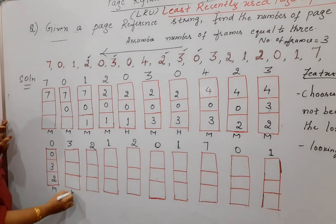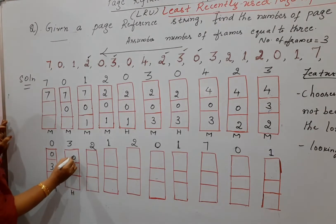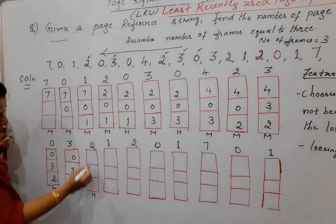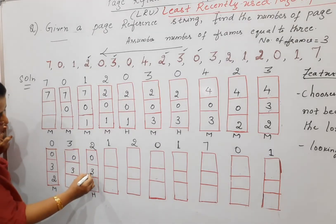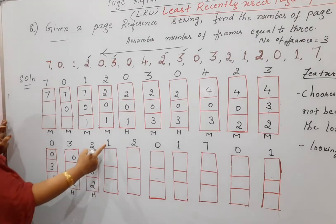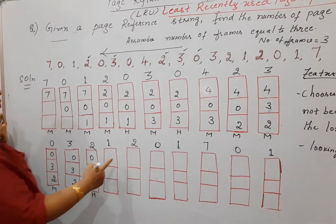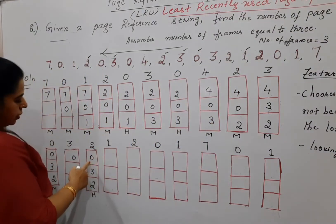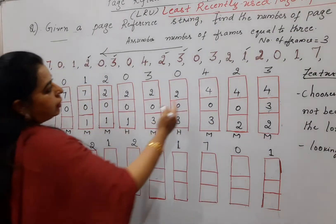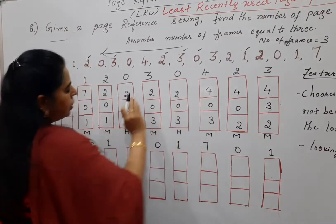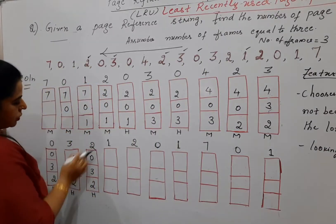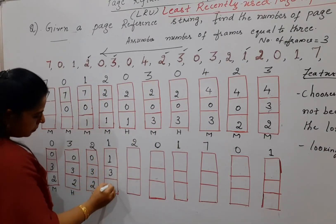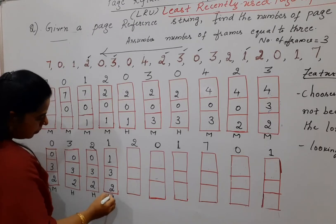Next is three — it is a hit. Next is two — it is a hit. Next is one: looking backward in the reference string, frames hold zero, three, and two. Zero is the one used long ago, so you replace zero with one. This was a miss.